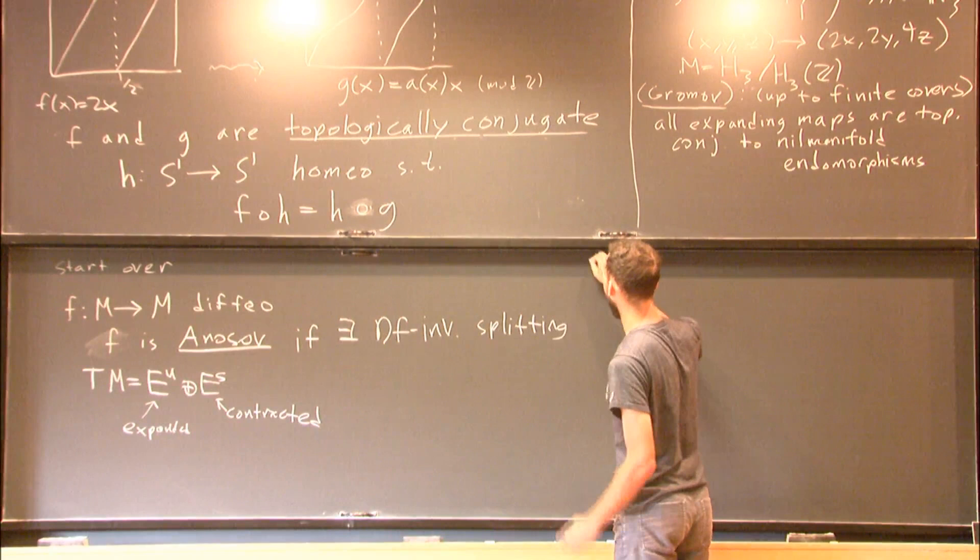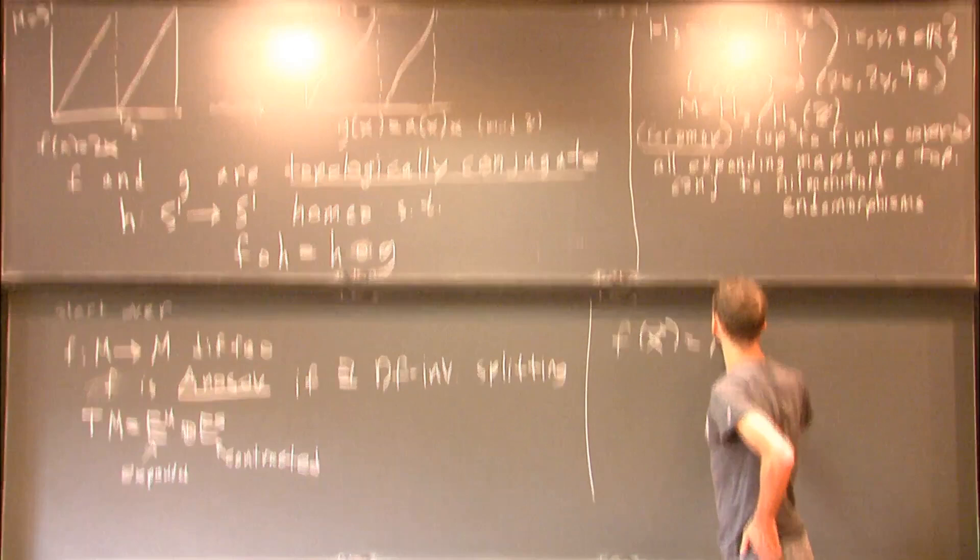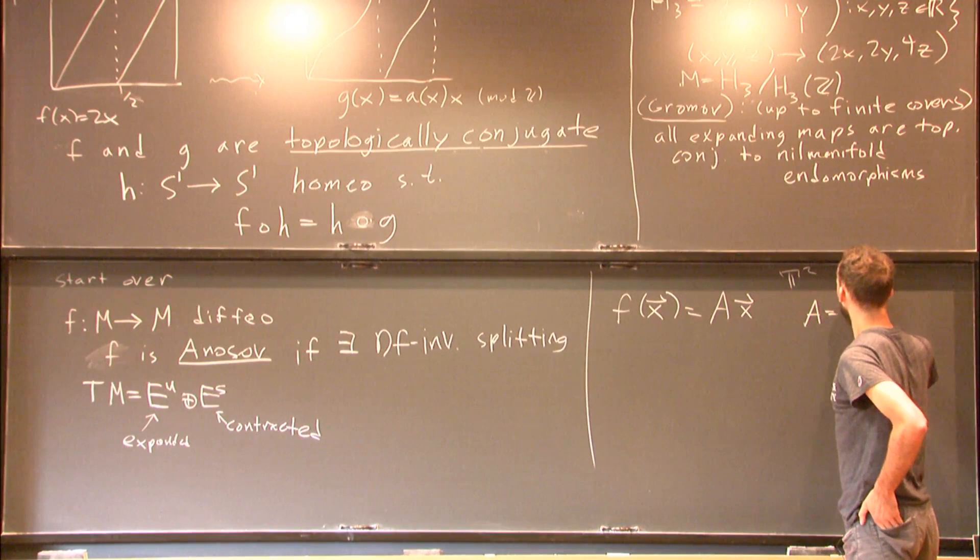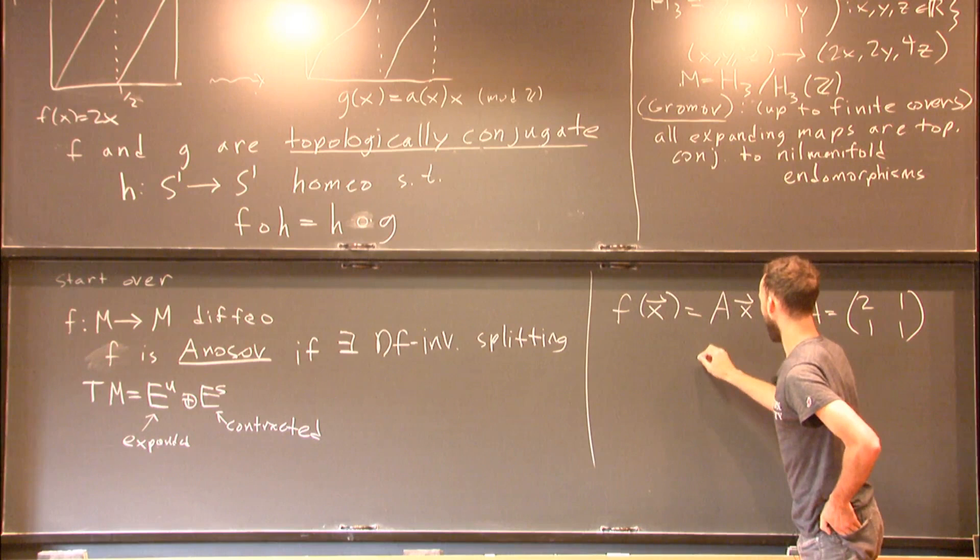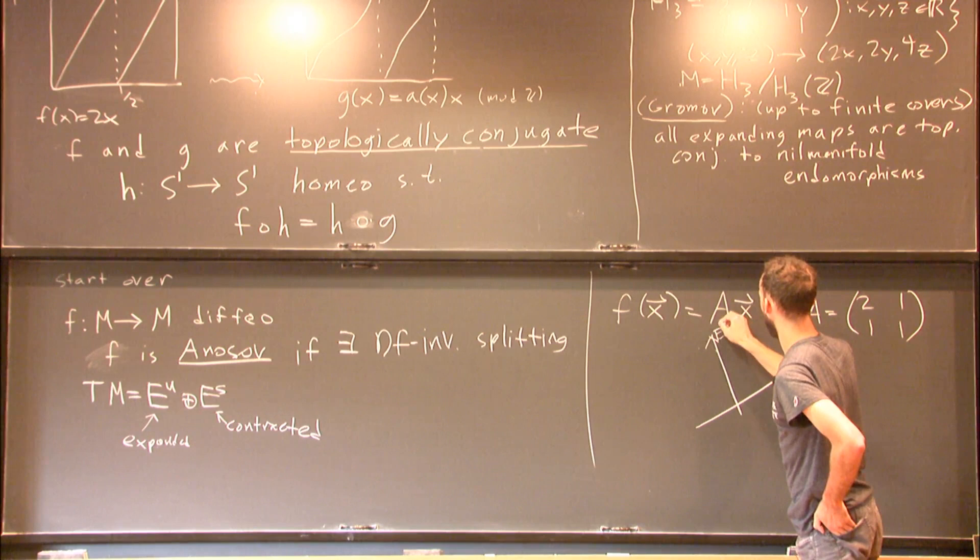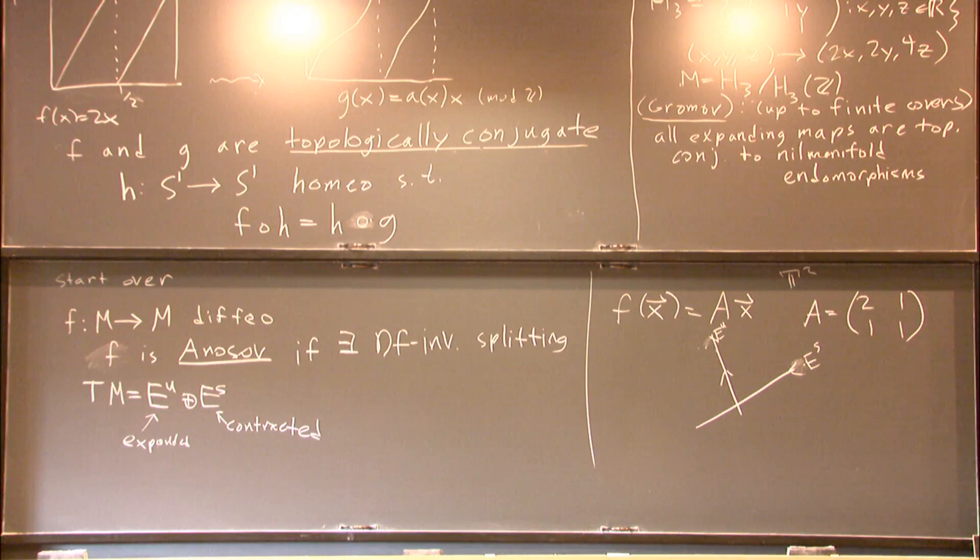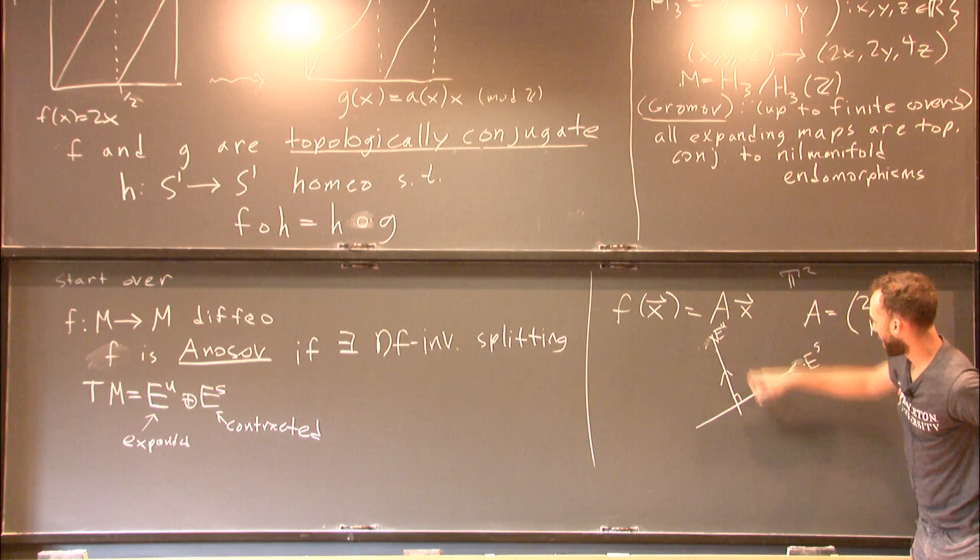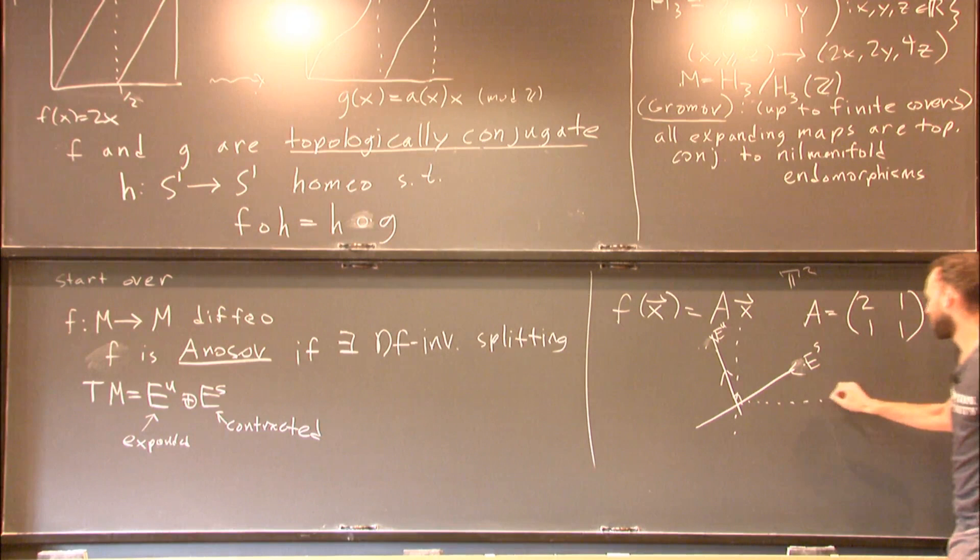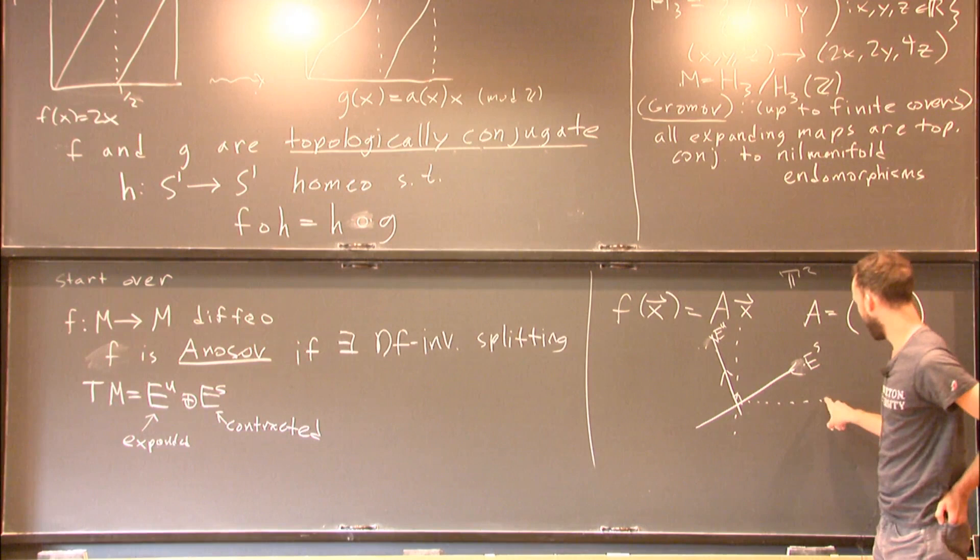And I really want you to think about the following example, which is the most famous one, I think. This is going to be on T2, where A is the following matrix. And this is going to look like the following. I've depicted the eigenspaces of the matrix here. And one direction is expanded. The other direction is contracted. And let me also draw in the axes of the ℤ2.